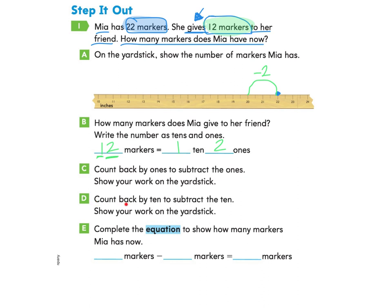Part D asks me to count back by ten to subtract the ten and show your work on the yardstick. So here's my one group of ten. Now I'm going to go to where I left off, and I'm going to take away ten, which lands me right here at the number ten.